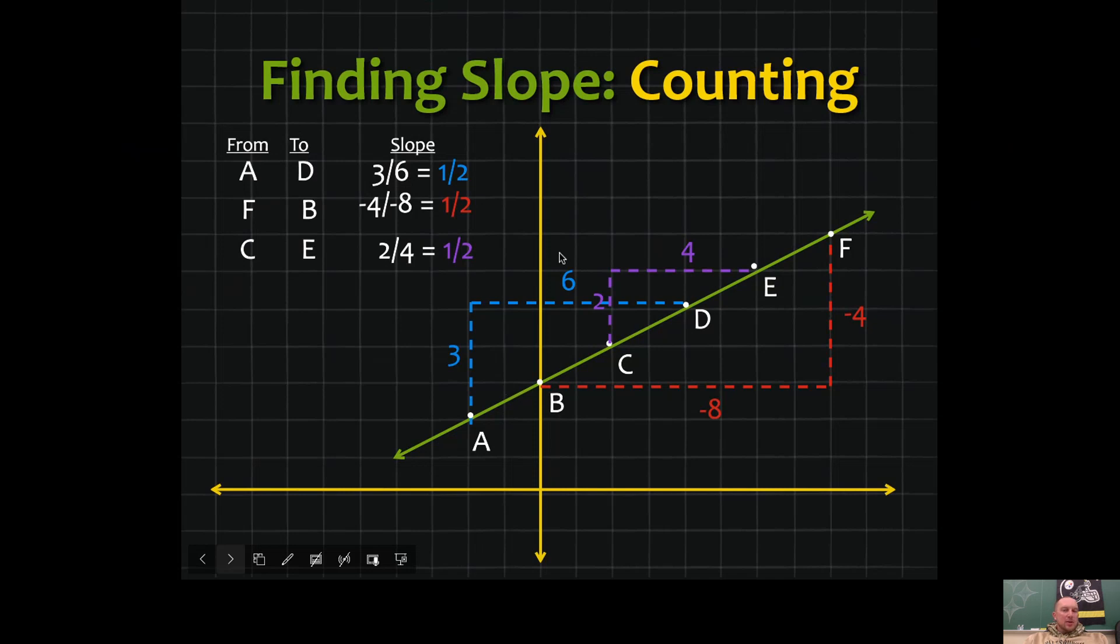You can also pick different points on the line. For example, point F and point B—we're going to rise a negative four because we went down, and we're going to run a negative eight because we went to the left. Negative four divided by negative eight equals the same 1/2.